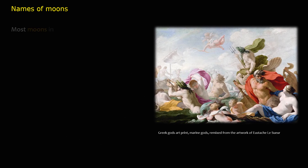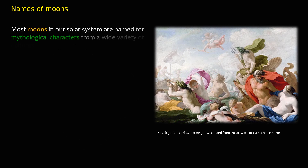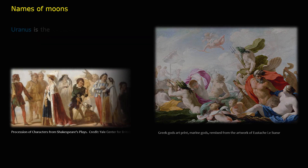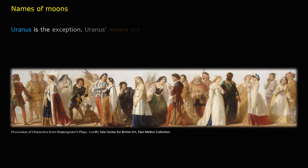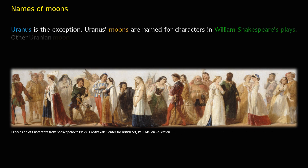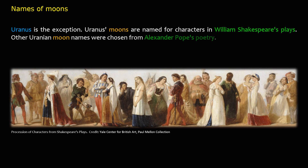Most moons in our solar system are named for mythological characters from a wide variety of cultures. Uranus is the exception — Uranus's moons are named for characters in William Shakespeare's plays. Other Uranian moon names were chosen from Alexander Pope's poetry.